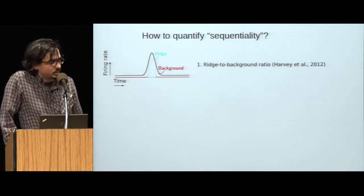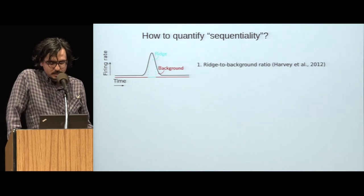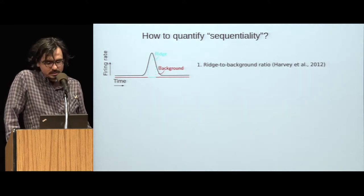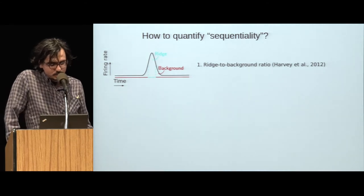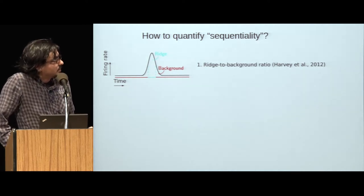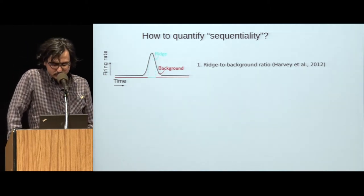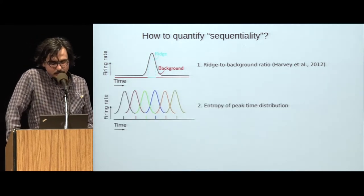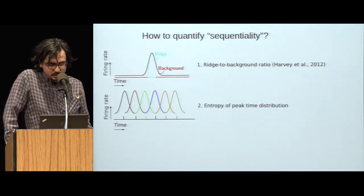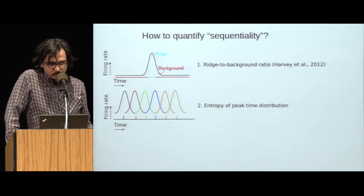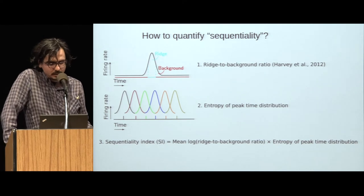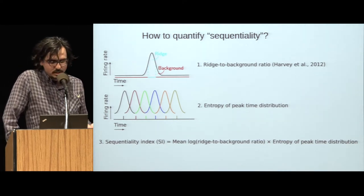To address our question, we also need to be able to quantify what exactly we mean by sequentiality. There are basically two properties we're looking for to consider an activity pattern sequential. First, the activity of each neuron should be temporally localized. We quantify this as the ridge to background ratio, the mean activity of a neuron inside a small window around its peak time divided by its mean activity during the rest of the trial, averaged across all neurons. Secondly, different neurons should be active at different points during the trial, such that their peak response times tile the duration of the trial roughly uniformly. We quantify this by the entropy of the peak time distribution. Our measure of sequentiality is just the product of these two terms.